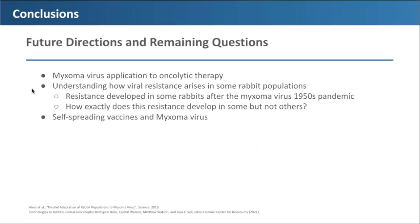Future directions and remaining questions with myxoma virus include how to deliver the virus to localized cancer tissue with oncolytic therapy, and understanding how viral resistance arises in some rabbit populations. Additionally, self-spreading vaccines are of interest as medical countermeasures in the event of a global catastrophic biological event, yet their current use is limited to non-human species, including for preventing the spread of myxoma virus among rabbits. Observing how these vaccines work in rabbit populations with myxoma virus can give insight into how they could work for future human use during a catastrophic biological event.